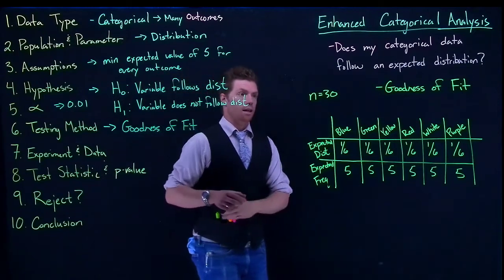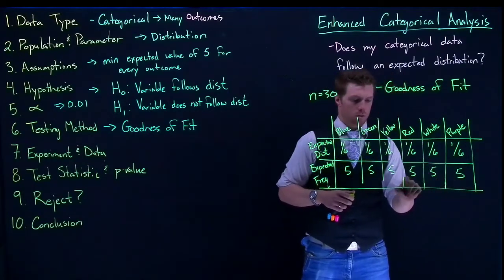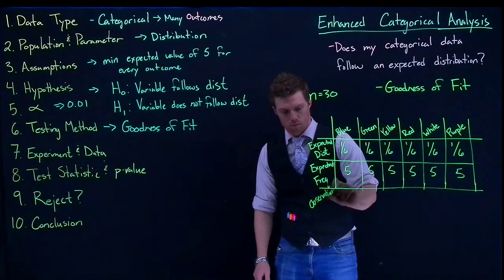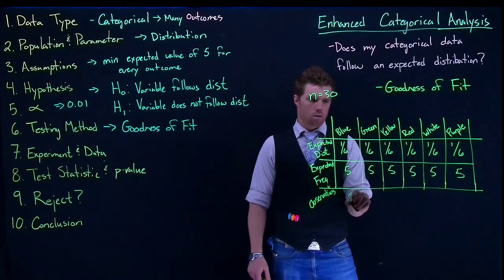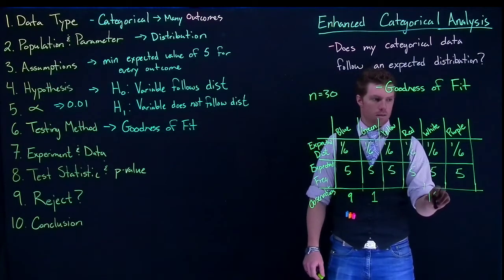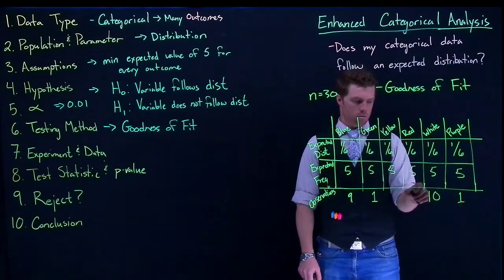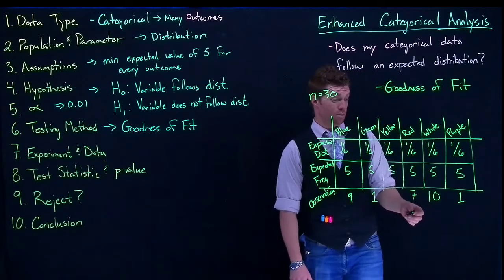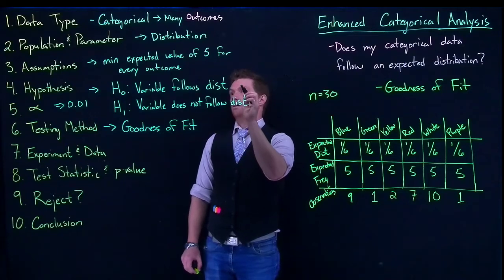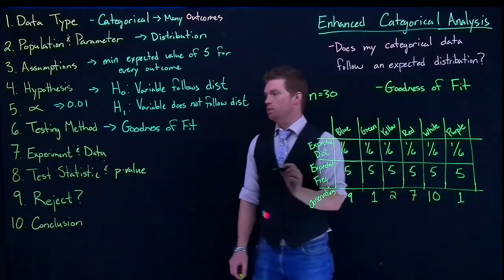Okay, so then we'd actually go out and collect our data. So suppose we actually did that. We can go through and get our observations. And suppose that we saw something like this. We'll have this be 9, let that be 1, we'll have this guy be 10, we'll have this guy be 1, and we'll have this guy be 7, and we'll have this last one be 2. Now our observations don't hit this value of 5, but that's okay. Our assumption was based upon the expected number. So we've got our observations, and we've collected our data.